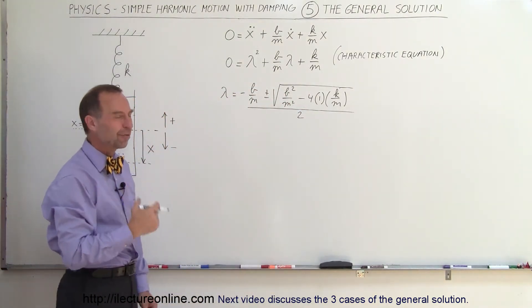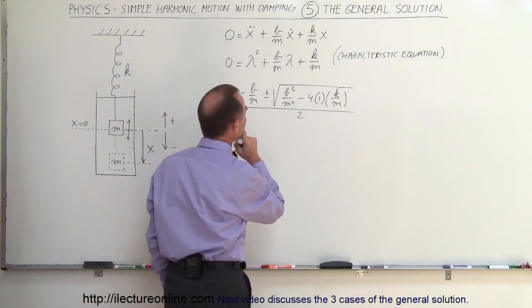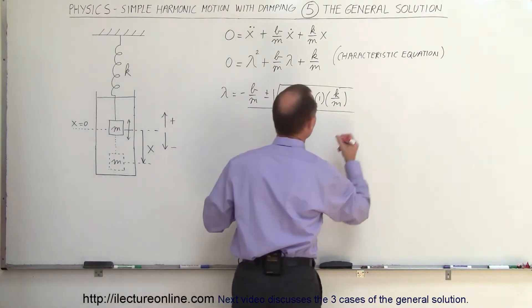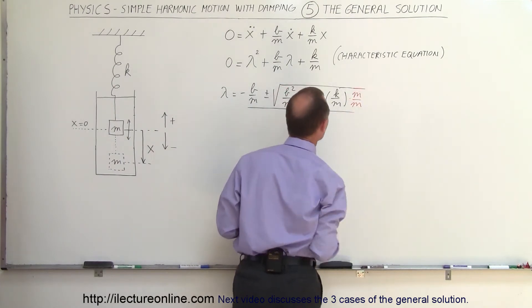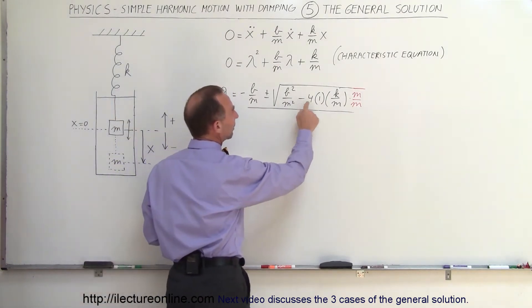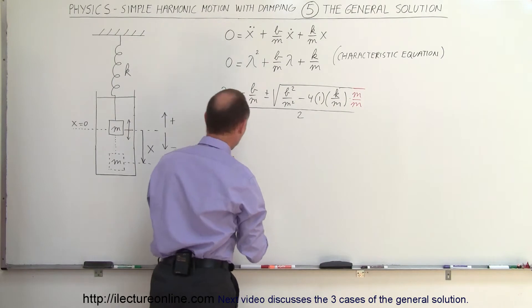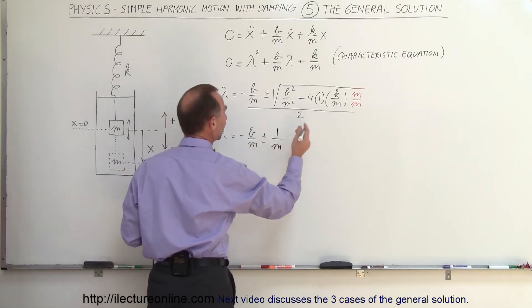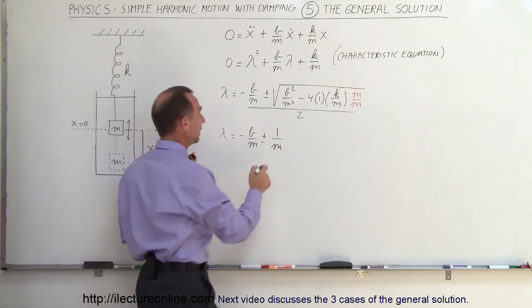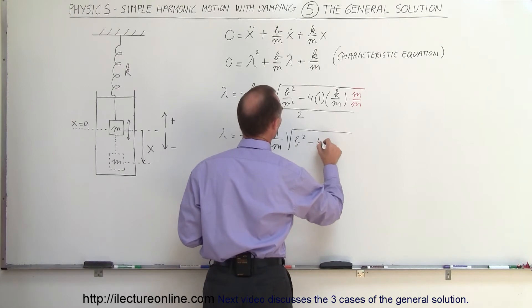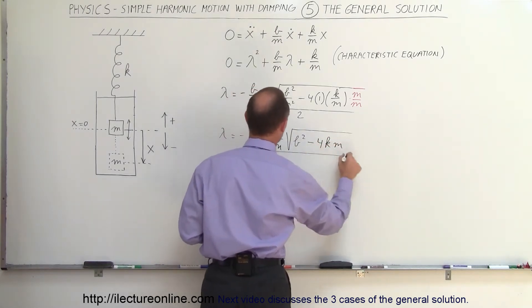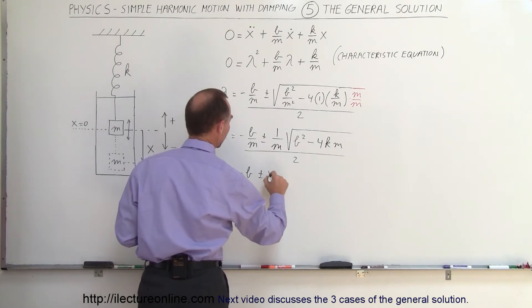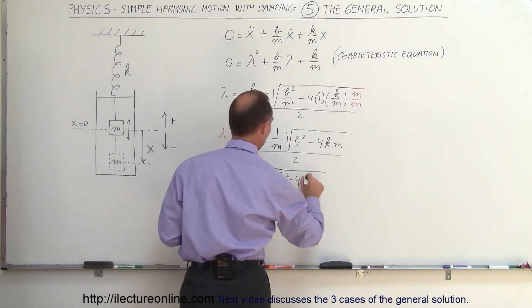That would be the solution, but let's simplify it a little bit. It looks like we could factor out an m squared in the denominator, so I'm going to multiply both the top and bottom of the second term by m — times m divided by m. When we do that, notice that we have m squared in the denominator which can be factored out, so this can now be written as lambda equals minus b over m, plus and minus 1 over m — because factoring m squared out of the radical simply gives m — times the square root of b squared minus 4km, the whole thing divided by 2.